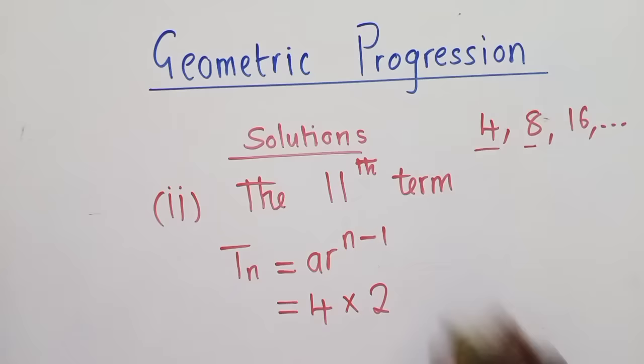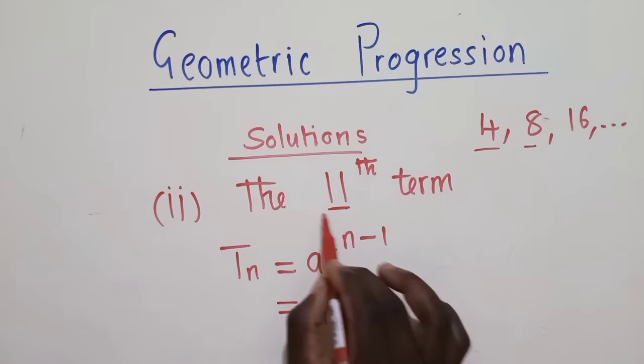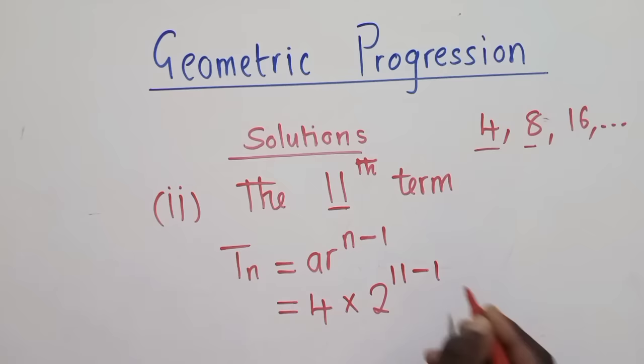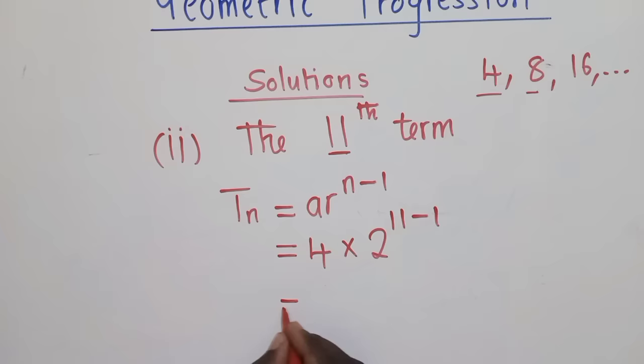Now, for our n. Remember, there is n here. N will be what we've been asked, the term. In this case, it's 11. So, we shall say 11 minus 1. From this stage, we work out things. We have 4 times 2 power 10.